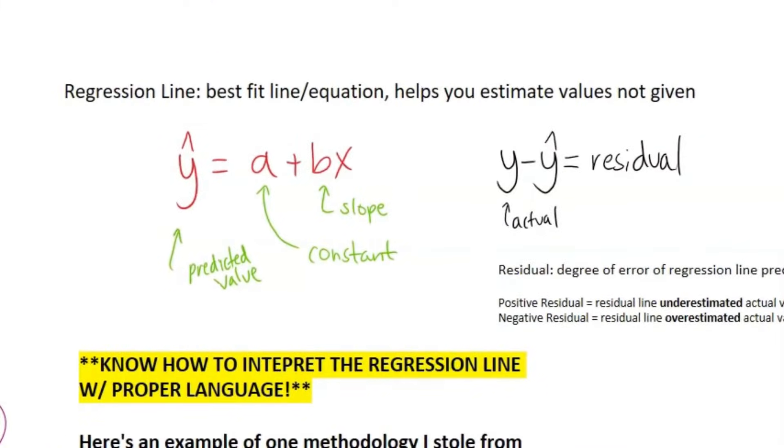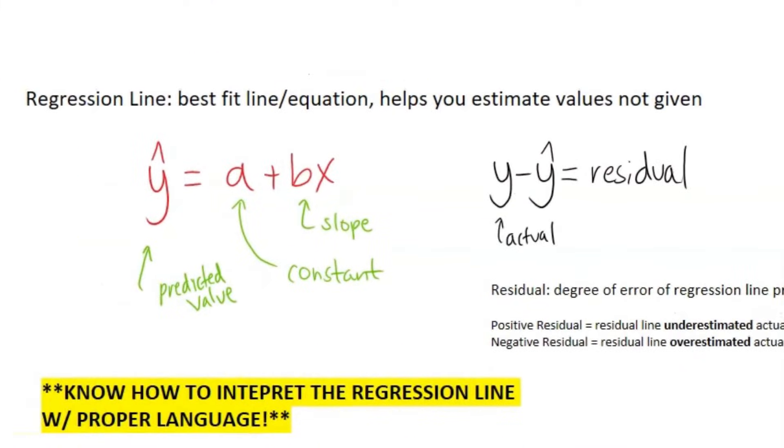Alright, so now let's talk about regression lines. Regression lines are essentially just your best fit line. So if you have a scatterplot with points, put your best fit line on there and it helps you estimate values for points that you aren't given. So what this looks like on the equation is y hat. You use y hat instead of y because it is your predicted value, not your actual y value. So it's y hat equals a plus bx. A is your constant, B is your slope.